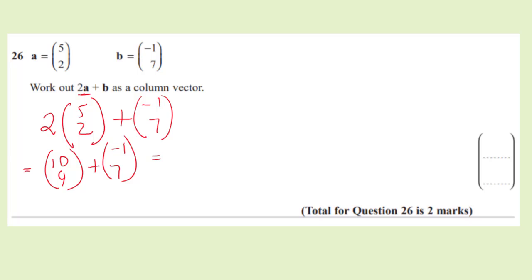10 plus a minus gives us a negative. So 10 take away 1 is 9, and 4 add 7 is 11. So our final answer is 9, 11. And these were two marks.